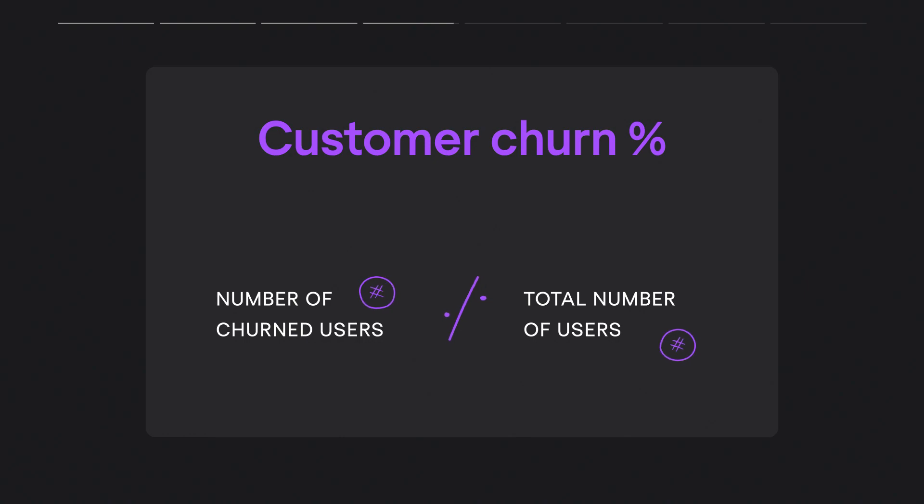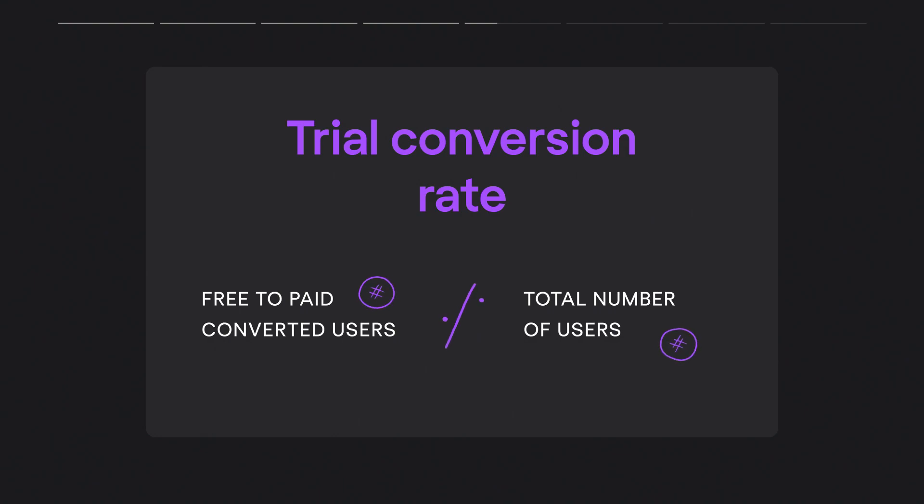Churn is inevitable. Regardless of business specifics, size, and development stage, there will always be customers who leave. But since even minor churn erodes the foundation of your growth, it's always worth working to reduce lost customers. Before you can work on a metric, you need to start measuring it. To calculate the average SaaS churn rate, divide the number of churned customers by the total number of users. Speaking of SaaS, we can't fail to mention trial conversion rate — it points out how many users who tried the service for free actually converted. If the rate is low, something is going wrong with either your onboarding or your product itself. To determine your conversion rate, divide the number of conversions by the total number of users.